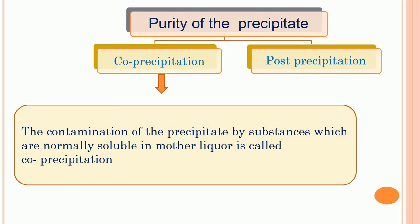When we prepare any precipitate by taking suitable reagents, the purity of that precipitate is most important. The purity of the precipitate depends on the solvent used for precipitation as well as the substances used for the precipitation. The purity of precipitates is discussed in terms of two types: co-precipitation and post-precipitation.